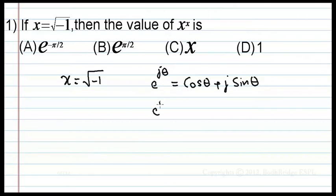Therefore e power j pi equal to cos pi plus j sin pi. This is equal to cos pi is minus 1 and sin pi is 0. Therefore this is equal to minus 1.